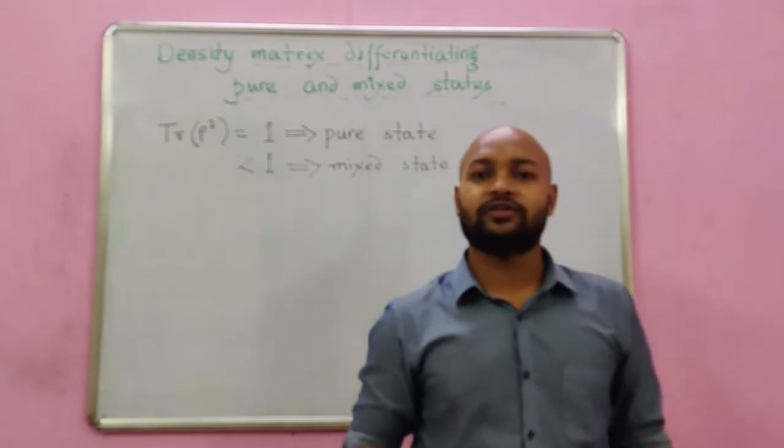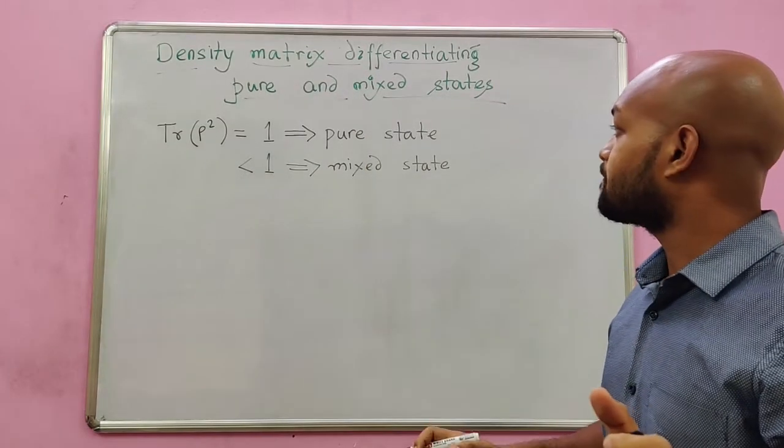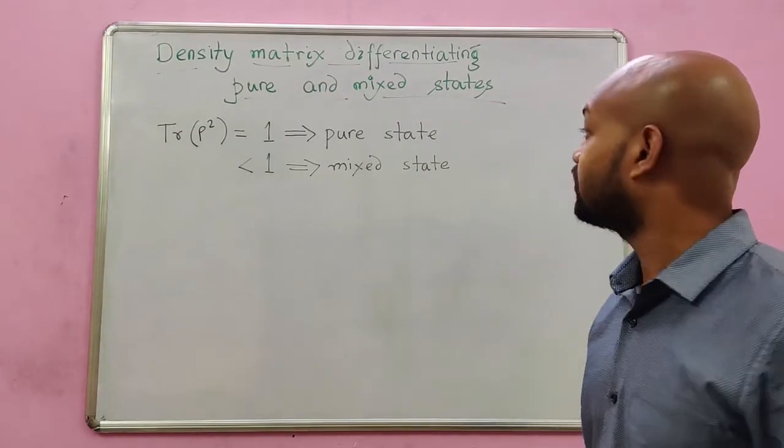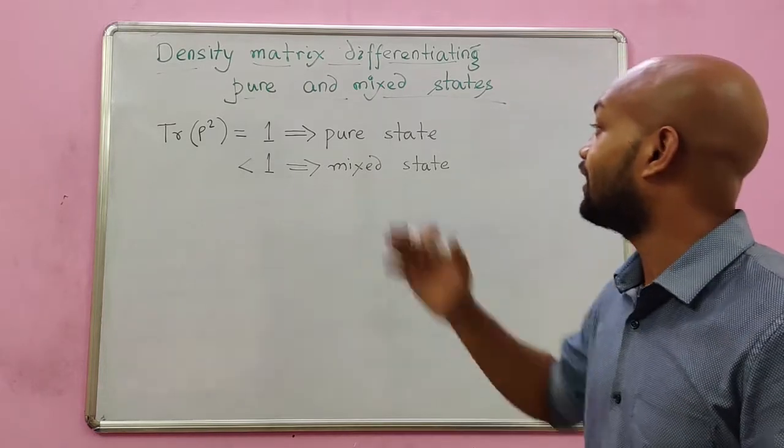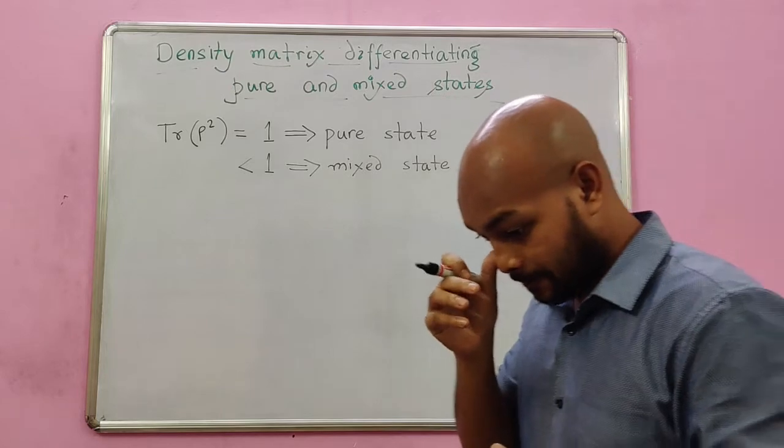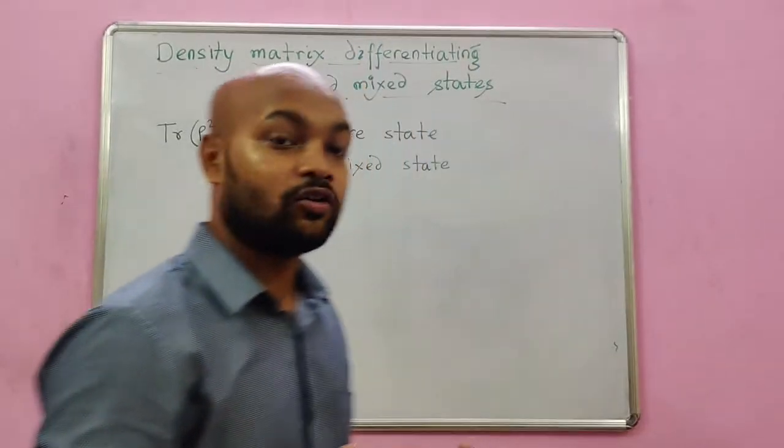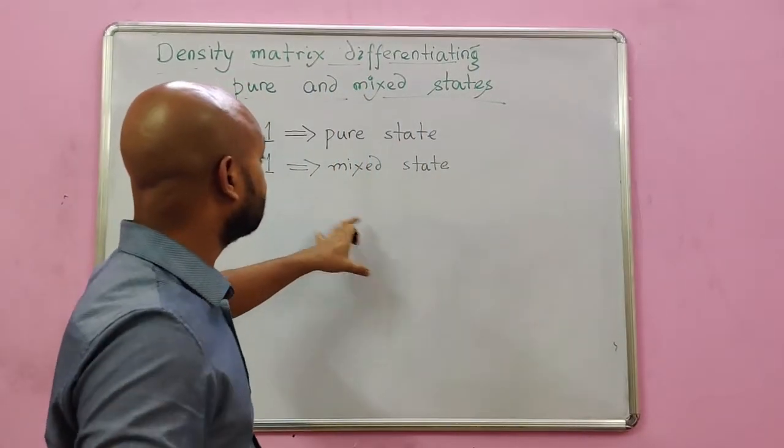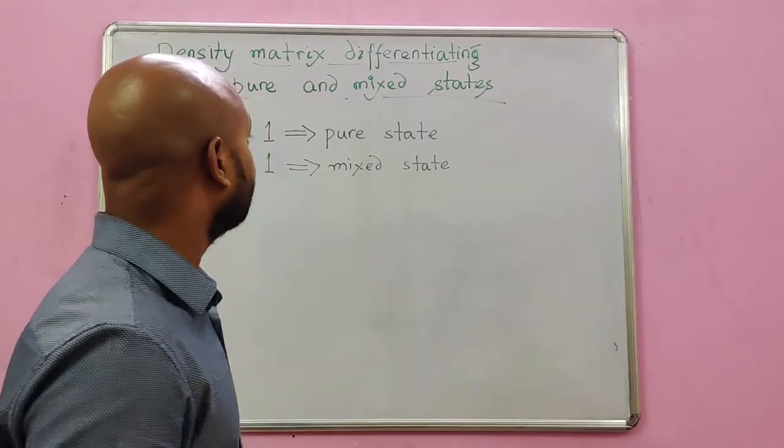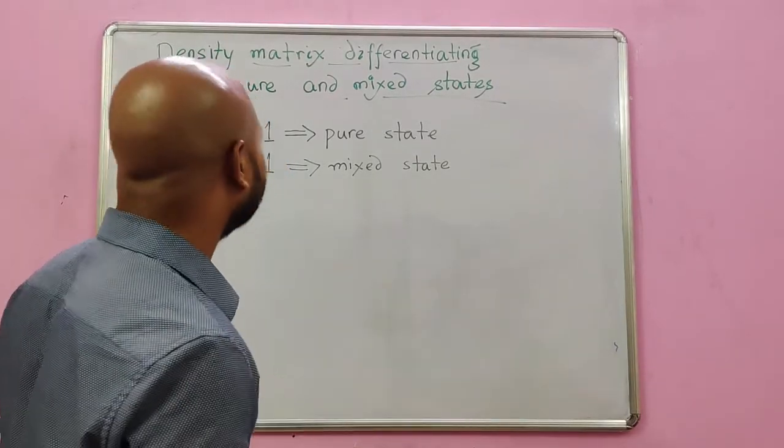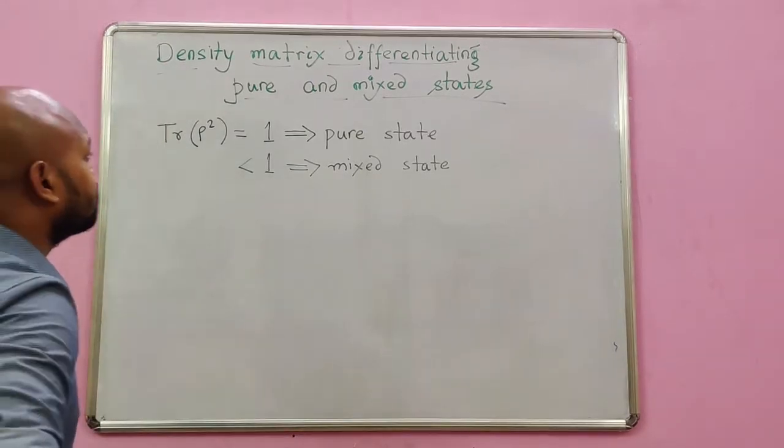Hi, let's try to address the question: why if I have a trace of rho squared equals to 1, then it's a pure state, and why if the trace value is less than 1, then it's a mixed state. So this formalism is very common and this is indeed the most standard notion which distinguishes the pure and mixed state. But let's see why that works.